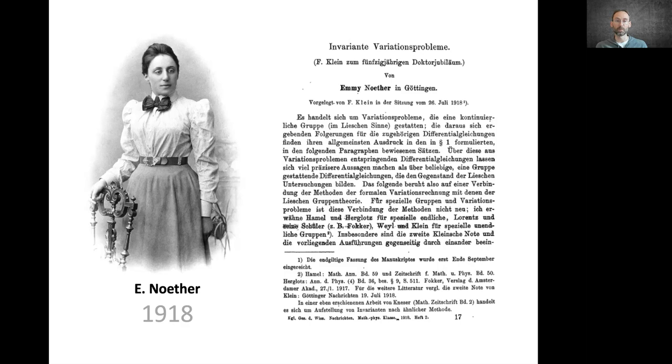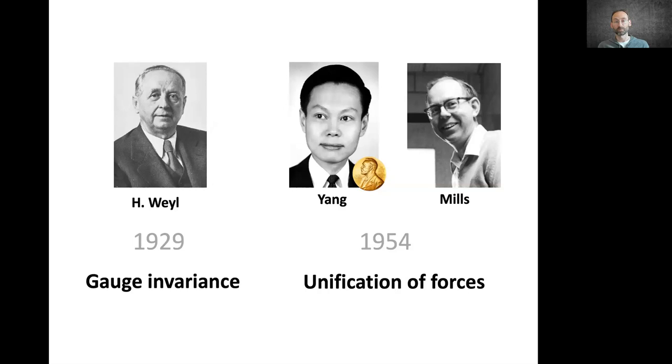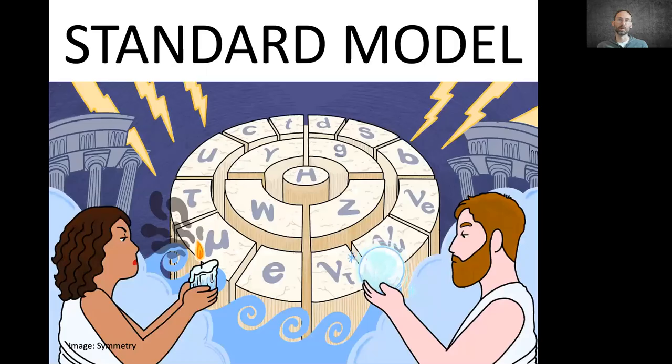These ideas also evolved into what is called gauge invariance and eventually became what we now know as the standard model, which can be completely derived from considerations of symmetry.